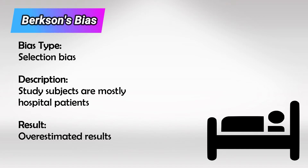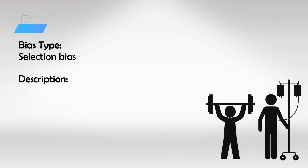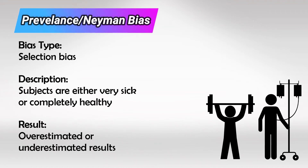Berkson bias is when most of the subjects in your study are chosen from hospital patients. This creates a study sample that is non-representative of the actual population. This is often confused with prevalence or Neyman bias, which is also a selection bias in which the study samples are either very sick or very well. It makes the results of the study a lot less or more severe than it actually is.